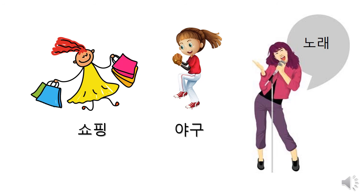너 야구하고 싶어? — You wanna go play baseball? 야구하고 싶어? You wanna sing a song? 노래하고 싶어? 너 노래하고 싶어? 음, 나 노래하고 싶어 — Yes, I wanna sing a song. 나 노래하고 싶어 — Yeah, I wanna sing a song.